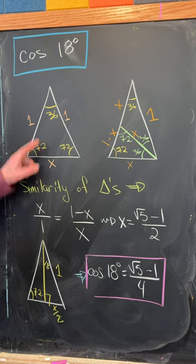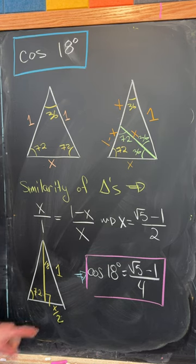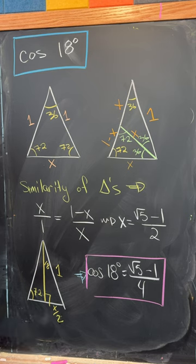But then bisecting this 36 degree angle, we see that cosine of 18 degrees is x over 2. That is, it's the square root of 5 minus 1 over 4.